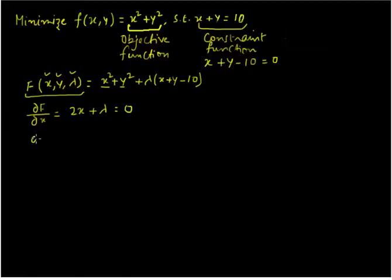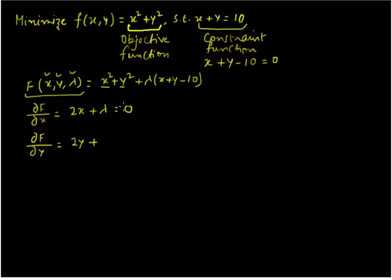Next, we are going to take the partial derivative of our function F with respect to y. From the first term we don't get anything. From the second term we are going to get 2y. Plus, from the third term we are going to get lambda again. And we are setting it equal to 0.